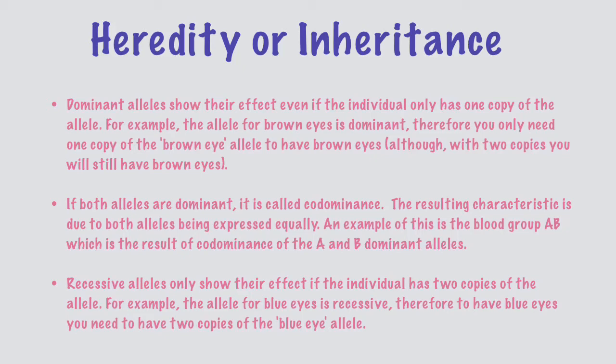For example, when we have blood group AB, this means that there is co-dominance of both A and B alleles. Coming to recessive alleles, recessive alleles show their effect only if the individual has two copies of the allele. For example, the allele for blue eyes is recessive. Therefore, to have blue eyes you need to have two copies of the blue eye allele. That is why a person with blue eyes has two blue eye alleles.